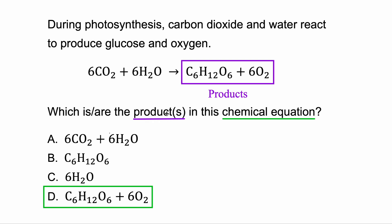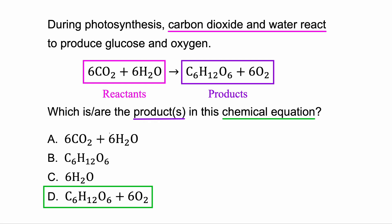They could also ask you: what are the reactants? Those are all of the things on the left side. How do you keep these straight? Usually they give it away by describing it. During photosynthesis, carbon dioxide and water react — let's highlight those. The first thing is carbon dioxide, the second is water. Notice they react or combine together — that's why they're called reactants.